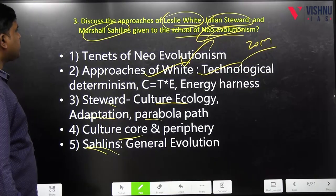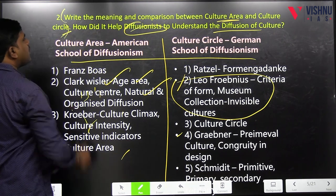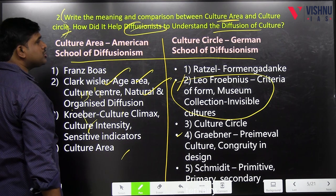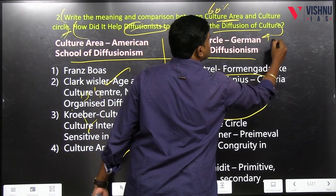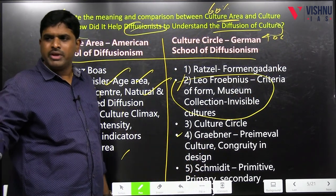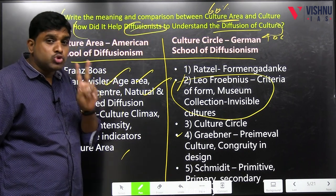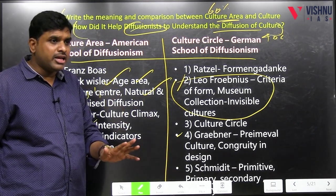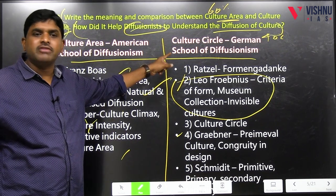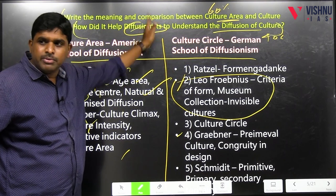Two questions — 50 percent each for the marks. For example: 'Write the meaning and comparison between culture area and culture circle' — that is 60 percent marks; 'how did it help diffusionists' — that is 40 percent marks. Reasoning: write the meaning and comparison means two schools will be discussed — German school and American school. The second question is about your observation, understanding, application. Applications are 40 percent; the concept is 60 percent.